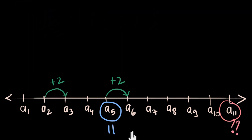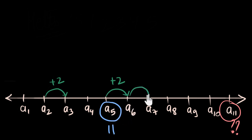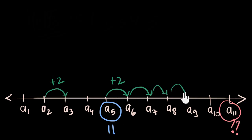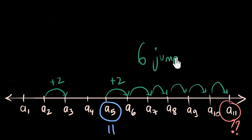Now that we've put everything on the number line, pause the video and think about it: how would you move from the 5th term to the 11th term? If you take one jump, you go from the 5th term to the 6th term. One more gets you to the 7th. So how many jumps do you need to go from the 5th to the 11th? Let's count together: 1, 2, 3, 4, 5, 6. So we need 6 jumps.